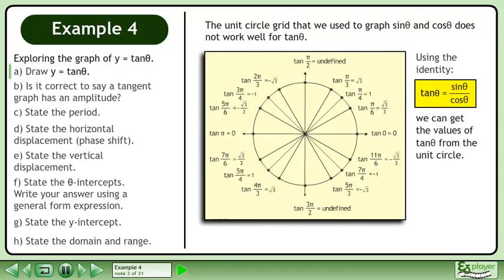Using the identity tan theta equals sine theta over cos theta, we can get the values of tan theta from the unit circle.